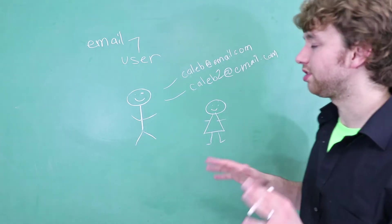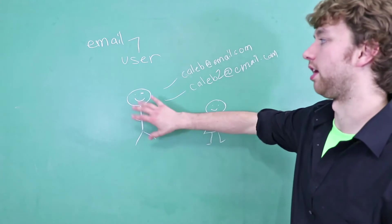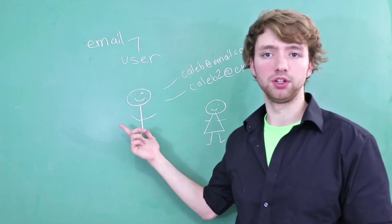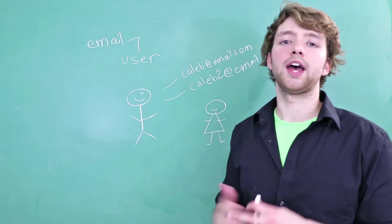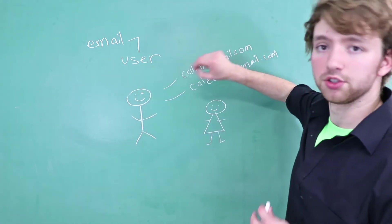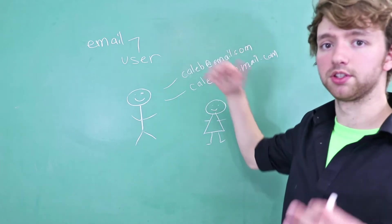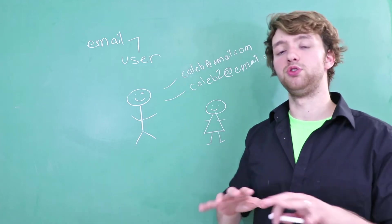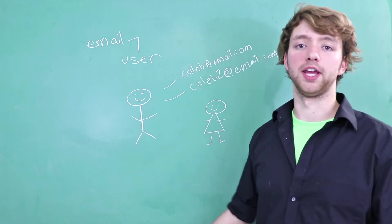So for example, you could design your database as a one-to-one with this, where a user can only have one email and that email can only be used by one user, or you could have it a different way where a user can have two emails or three emails or unlimited emails and so forth. Once you understand how to design the different relationships, it allows you to decide how to structure your database.